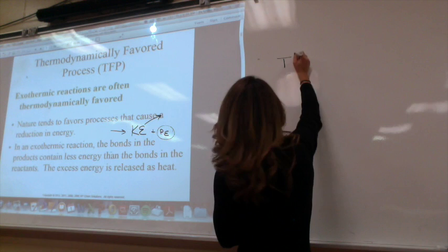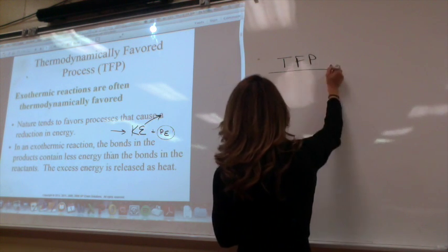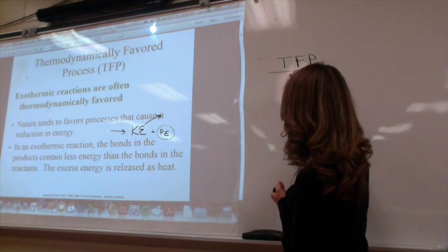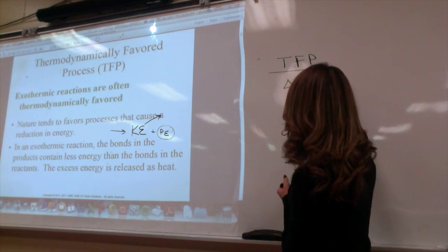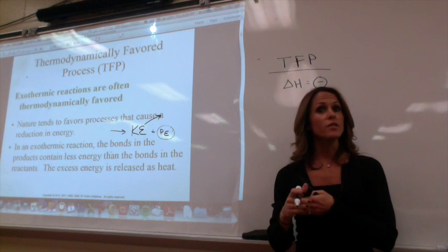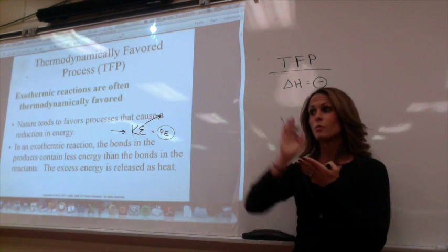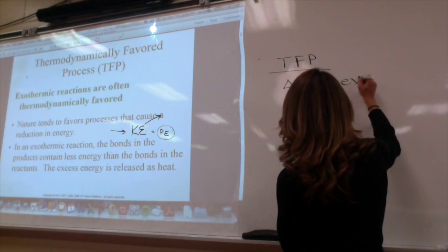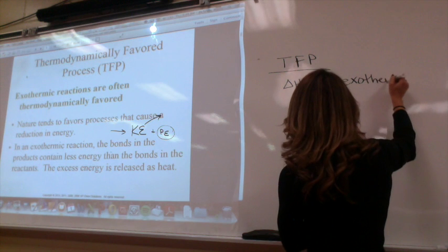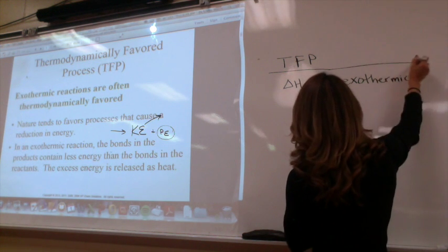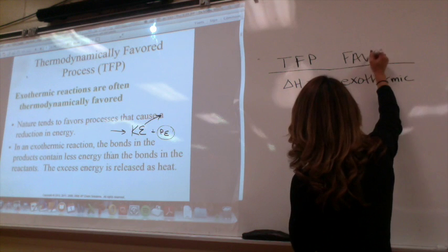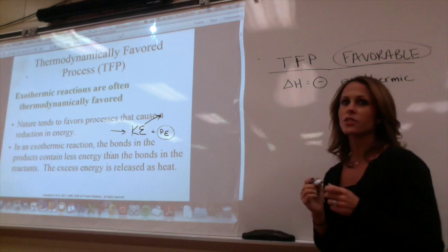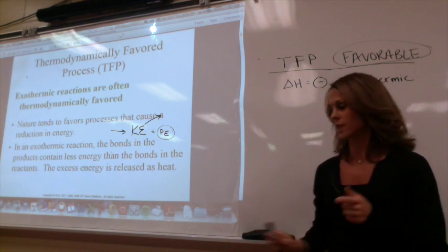A key thing to know: delta H negative, which is exothermic, is always favorable because it's putting out energy into the surroundings. Favorable means we want this to happen — we want our reactions to have negative delta H values.